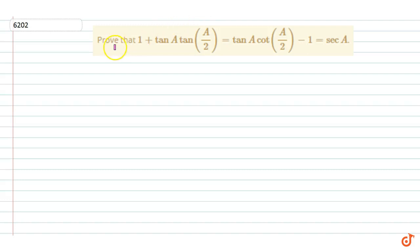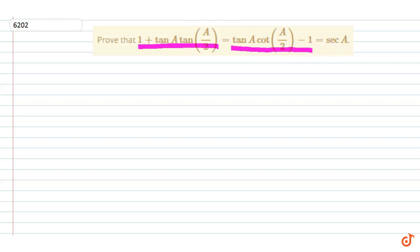In this question we have to prove that (1 + tan A) · tan(A/2) = tan A · cot(A/2) - 1 = sec A. First of all, let us see that tan A equals...